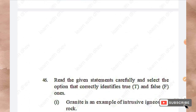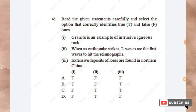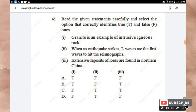The next section is the Achiever Section. Question 46: Read the statements carefully. Statement 1: Granite is an example of intrusive igneous rock — True. Statement 2: When an earthquake strikes, L-waves are the first waves to hit the seismograph — False. Statement 3: Extensive deposits of loess are found in northern China — True. So Option B (True, False, True) is the right answer.